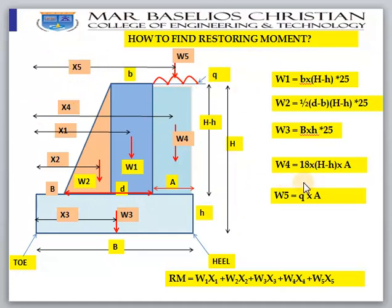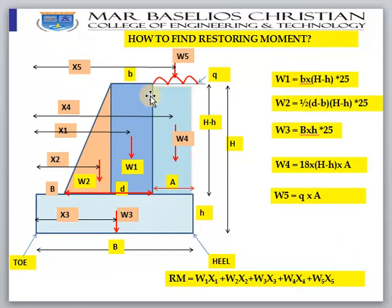The restoring moment is W1×x1 + W2×x2 + W3×x3 + W4×x4 + W5×x5. To find W1, it is the weight of the rectangular portion of the stem: B × (H − h) × 20 kN/m³ (unit weight of concrete). W2 is the triangular portion: ½ × (D − B) × (H − h) × 25.